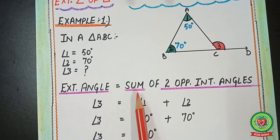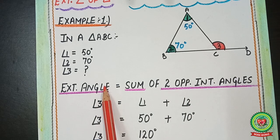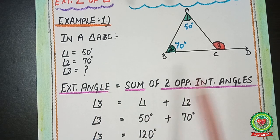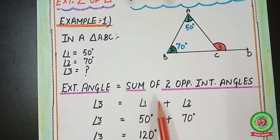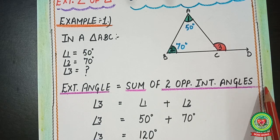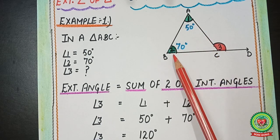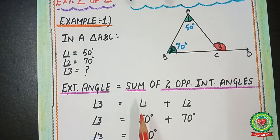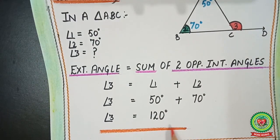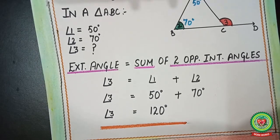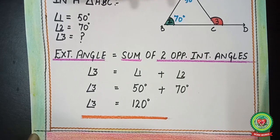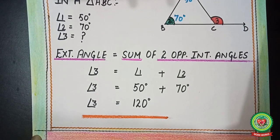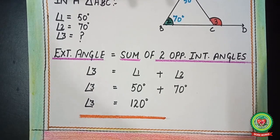Angle three is the exterior angle, so we write: angle three equals angle one plus angle two, which are the two opposite interior angles. Substituting: angle three equals 50 degrees plus 70 degrees, which gives us 120 degrees. So the value of angle three is 120 degrees.